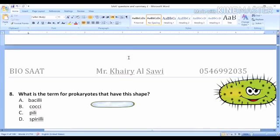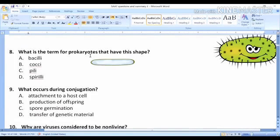Question eight: What is the term for prokaryotes that have this shape? Is it bacilli, cocci, pili, or spirilli? Bacilli is a rod shape. Cocci is a spherical shape. Pili is just the outer hair-like projection.